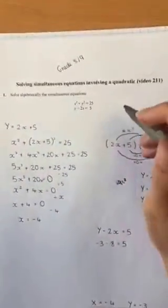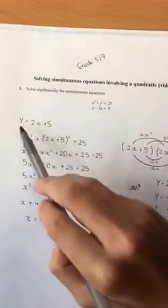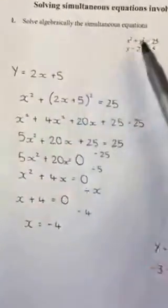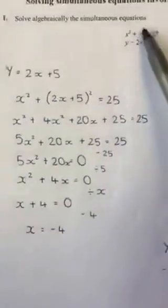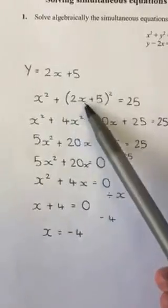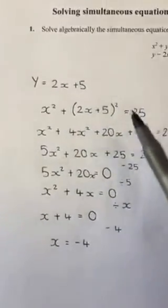Our first step is to rearrange the equation, so that's y equals 2x plus 5. We then substitute this equation for the y that's up here. So it's x squared plus 2x plus 5 squared equals 25.